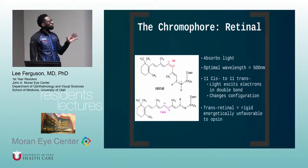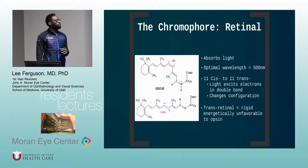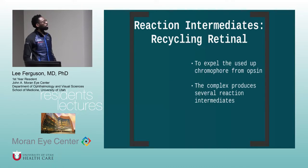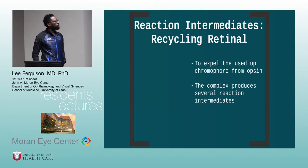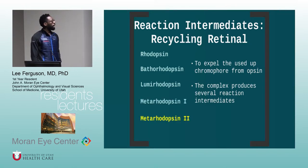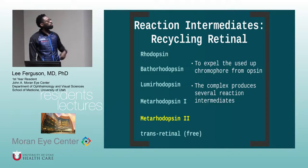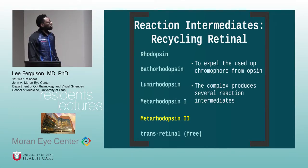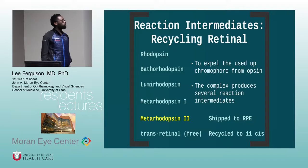The chromophore gets transformed from the 11-cis to the 11-trans form after being excited by light. The trans-retinal form is considered energetically unfavorable in the opsin molecule. The goal for the retinal is to expel the used-up chromophore and have it recycled. You go through multiple intermediates: rhodopsin → bathorhodopsin → lumirhodopsin → metarhodopsin 1 → metarhodopsin 2. Metarhodopsin 2 is the form involved in the light transduction pathway. The trans-retinal form is released, sent to the RPE, and recycled back into the 11-cis form.